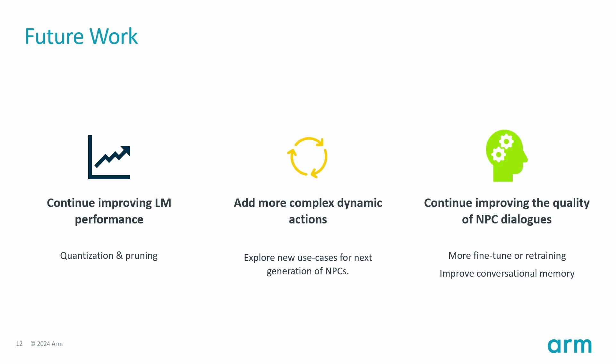Although our NPC's reply speed is fast enough for real-time gaming, we can still improve the language model performance using methods like quantization and pruning — these are our next plans. This will help reduce the latency and the extra memory footprint used by running the language model locally. We would also like to add more complex dynamic actions to our NPC using Unity simulations, to explore new use cases for the next generation of NPCs. Lastly, we want to continue improving the language model quality for NPC dialogues. This includes fine-tuning or even retraining Tiny Stories with dialogue-based data. We also want to improve the conversational memory so that the NPC can remember a wider context of more variety.